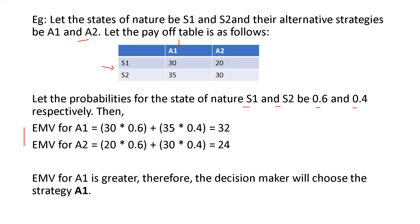EMV for A1: 30 into 0.6 plus 35 into 0.4, which gives 32. For strategy A2: EMV is 20 into 0.6 plus 30 into 0.4, which gives 24. Comparing EMVs, the highest value is for A1. Therefore, the decision maker will choose strategy A1.